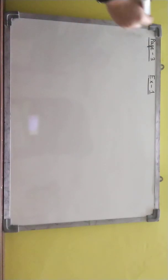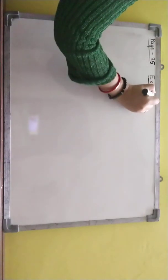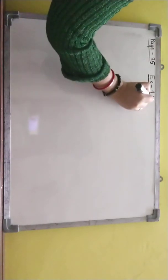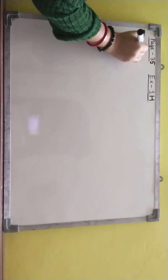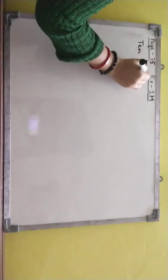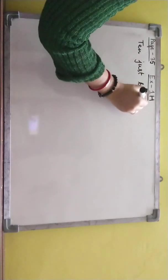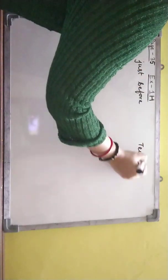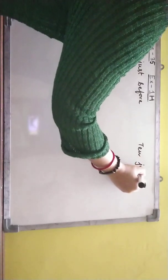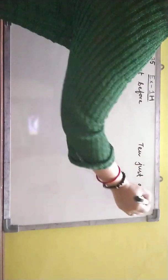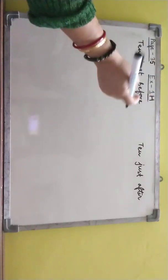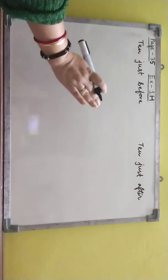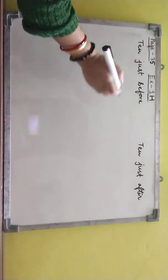In this video, page number 35, 1H. In this video we are going to learn about 10 just before and 10 just after. Afterwards I will be telling you shortly how will you decide what to write where. But now you have to understand why it comes like that. Fine.